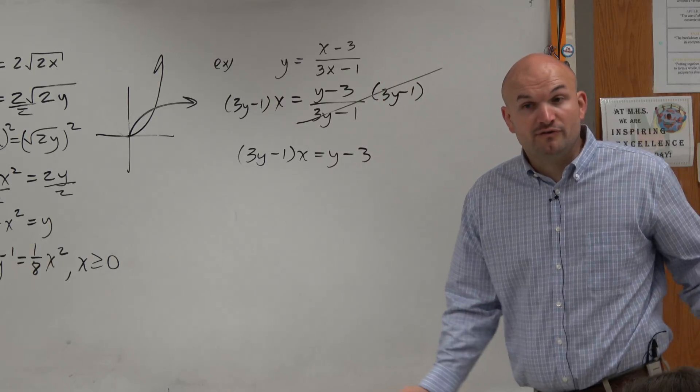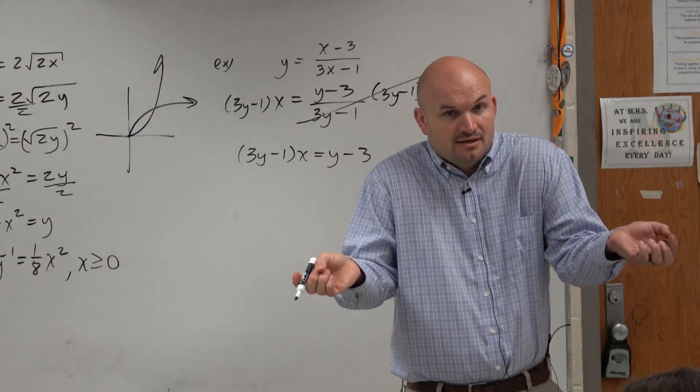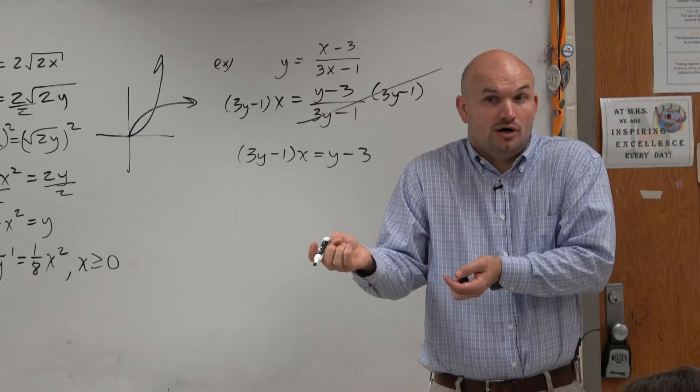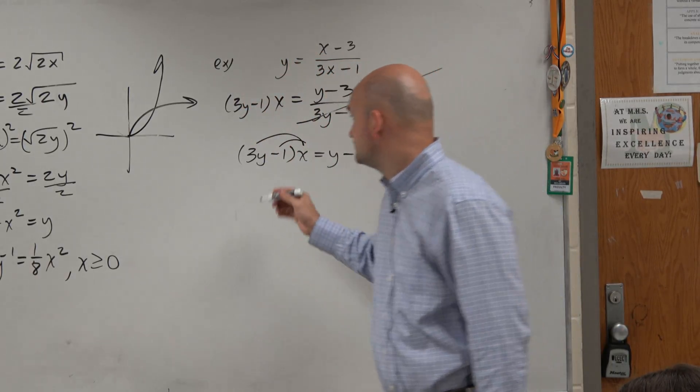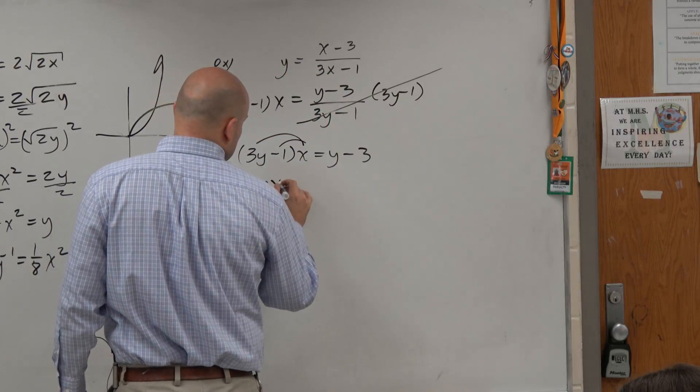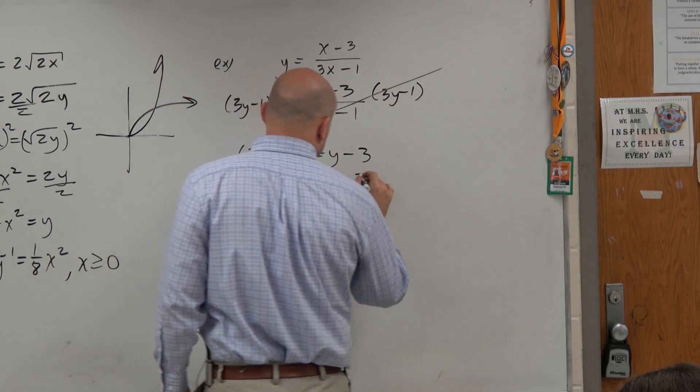Again, now we have two variables, but they're on opposite sides. One's inside of a parenthesis. So I've got to get it outside the parenthesis. And to do that, I'm just going to apply distributive property. So I have 3yx minus x equals y minus 3.